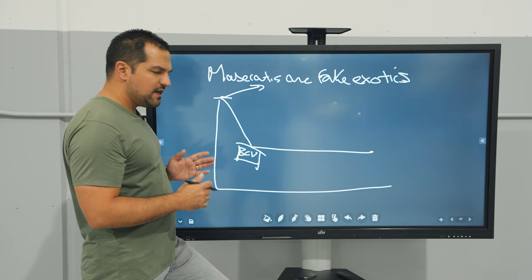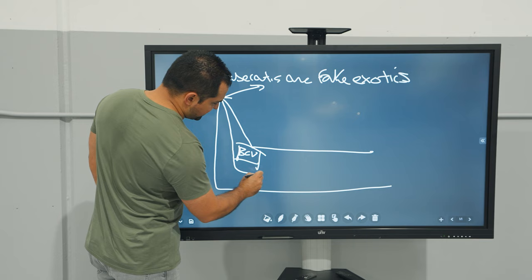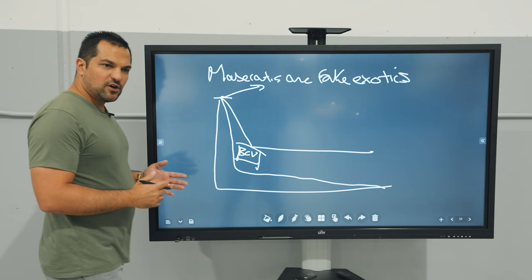But Maseratis do something very different. You see the average normal car drops and depreciates and then over time just drops down to zero, basically having no worth. That's why regular cars cannot be hacked and are basically depreciating liabilities.